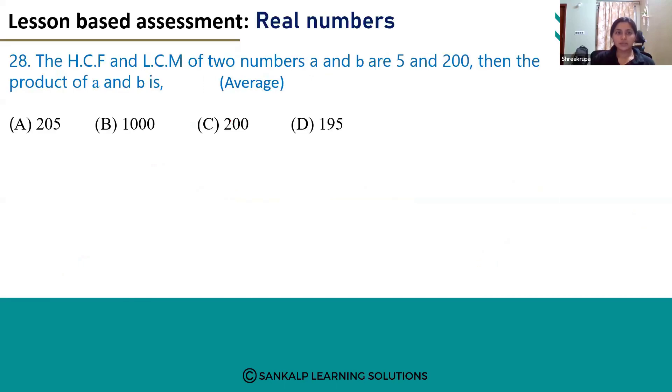Hello everyone. Let's see question number 28. The HCF and LCM of two numbers A and B are 5 and 200, then the product of A and B is.